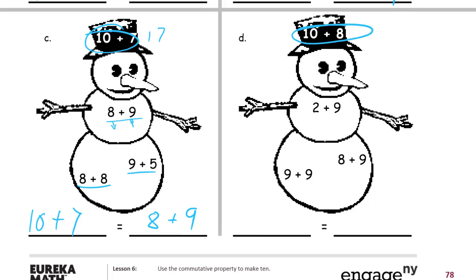Here's ten plus eight on the hat — that's eighteen. We're looking for expressions that equal eighteen. Nine plus two is eleven — not that one. Eight plus nine is the same as ten plus seven — that's seventeen — not that one. Nine plus nine is the same as ten plus eight, which is eighteen. So we have ten plus eight from the hat, and nine plus nine are the same — they both equal eighteen, so they equal each other.